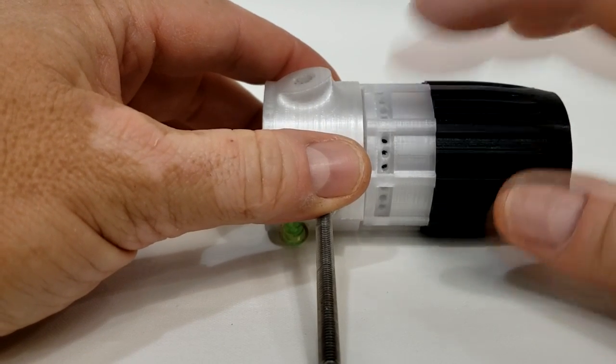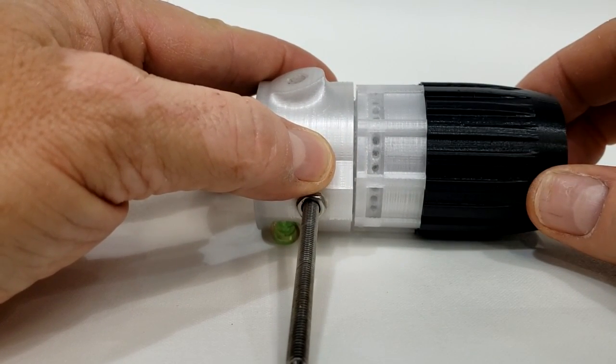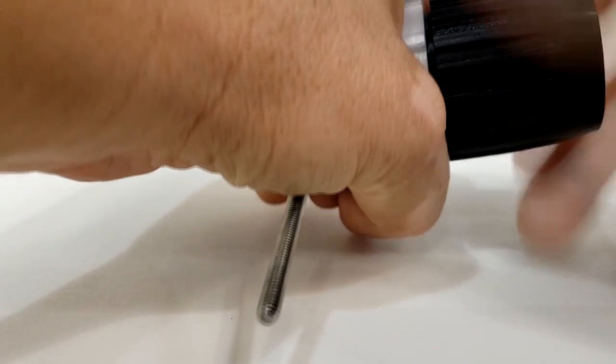In the rear of the scope you have two different rings that are removable. You have a sunshade and you have a retainer ring. Each one of these is capable of retaining a lens or a pin.